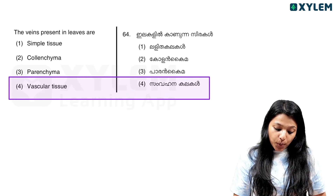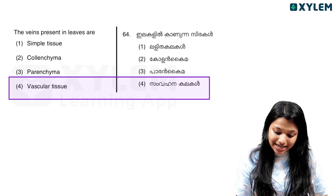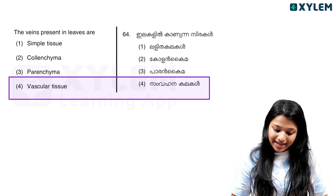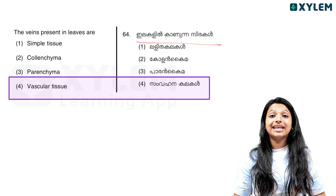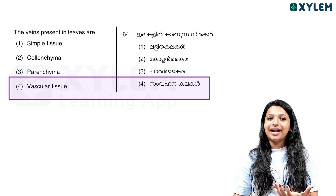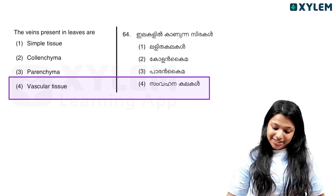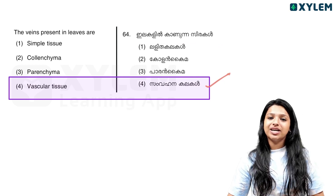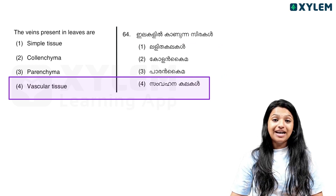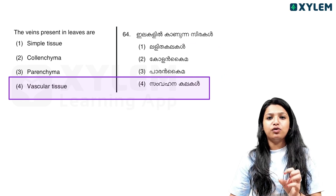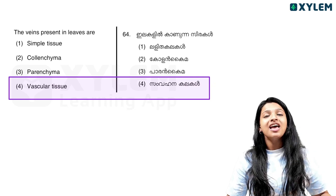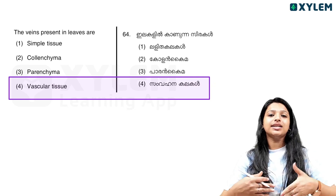Veins present in leaves — the veins seen in leaves contain vascular tissues. Xylem flows through them. The veins in leaves carry out transportation.